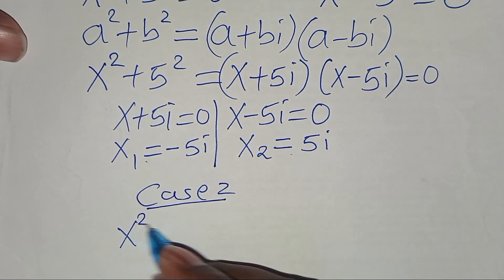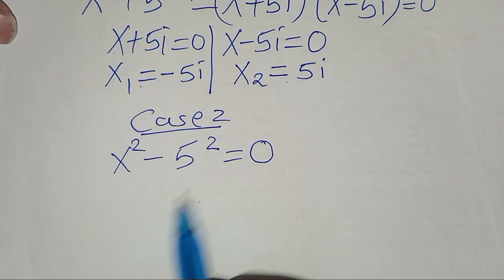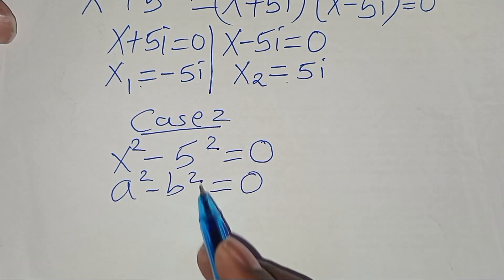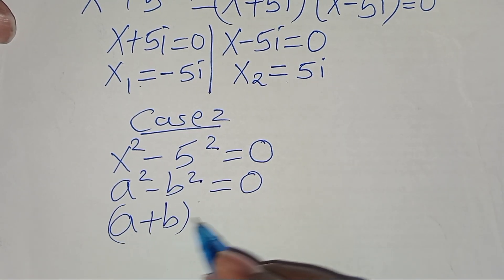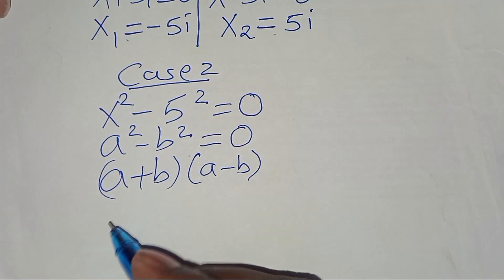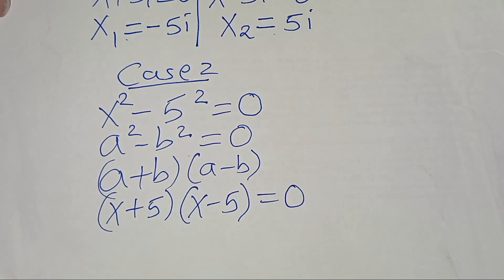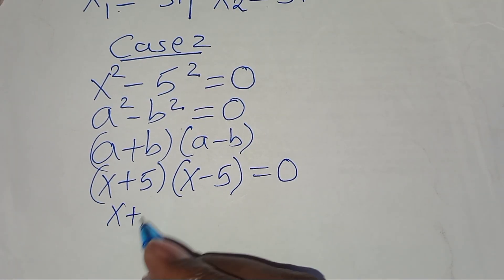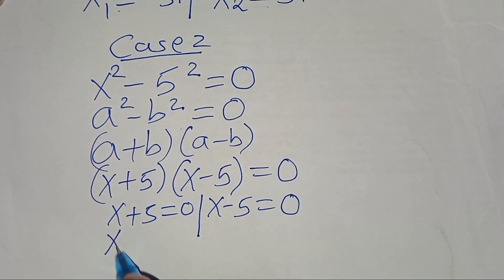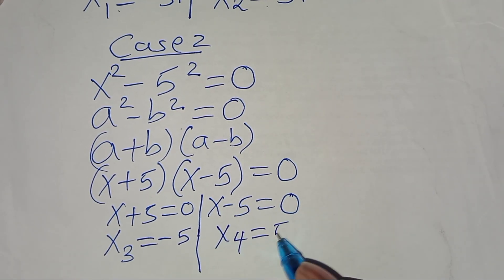Case 2: x to the power 2 subtract 5 to the power 2 equals 0. This is in the form of a squared minus b squared, which we can express as (a plus b)(a minus b). So x squared minus 5 squared becomes (x plus 5)(x minus 5) equals 0. This gives us x plus 5 equals 0 and x minus 5 equals 0, so x₃ equals negative 5 and x₄ equals 5.